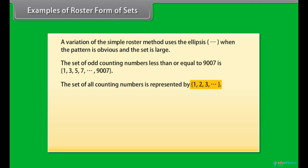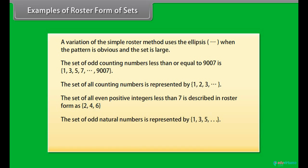Set of all counting numbers is represented by 1, 2, 3 and so on. The set of all even positive integers less than 7 is described in the roster form as 2, 4, 6.